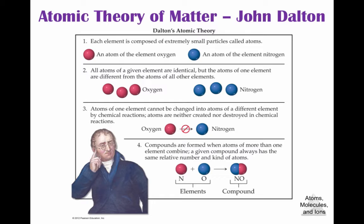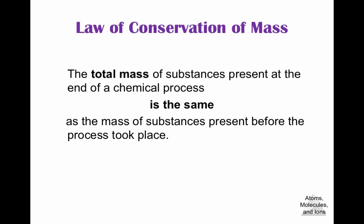We looked at the law of definite proportions in chapter 1, but we'll visit it briefly here as well. Dalton's third postulate focused on the law of conservation of mass, and this still holds true. The total mass of substances present at the end of a chemical process is the same as the mass before. You cannot destroy mass — if you have 10 grams before, you have to have 10 grams after.